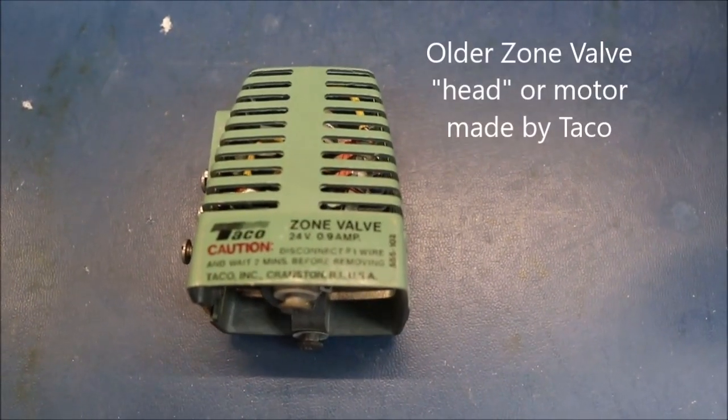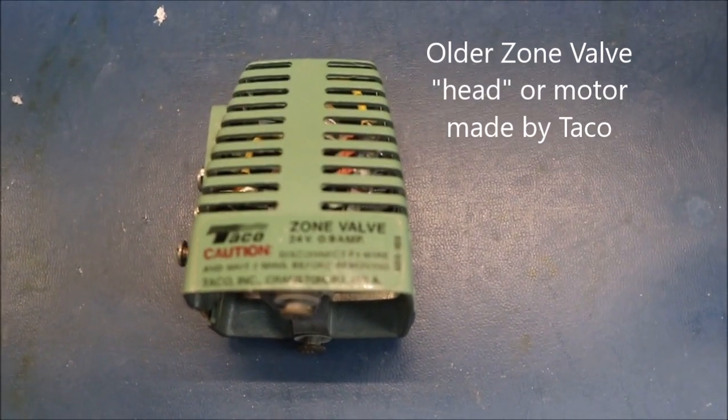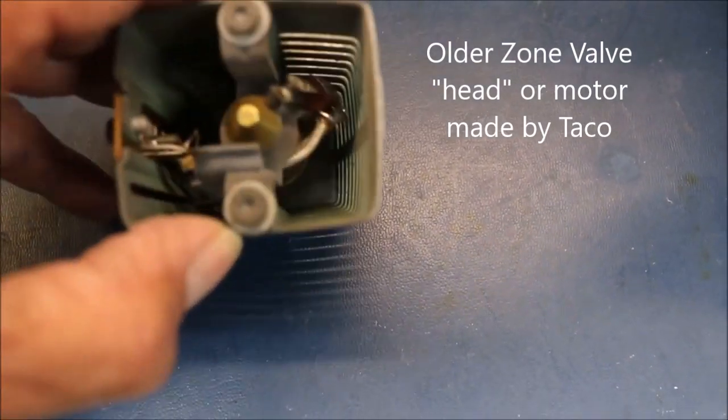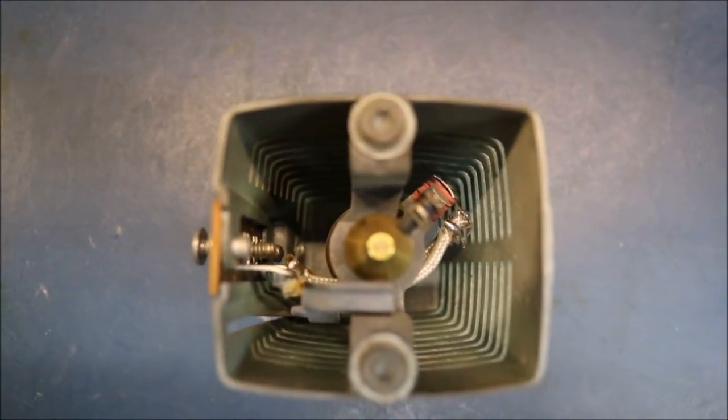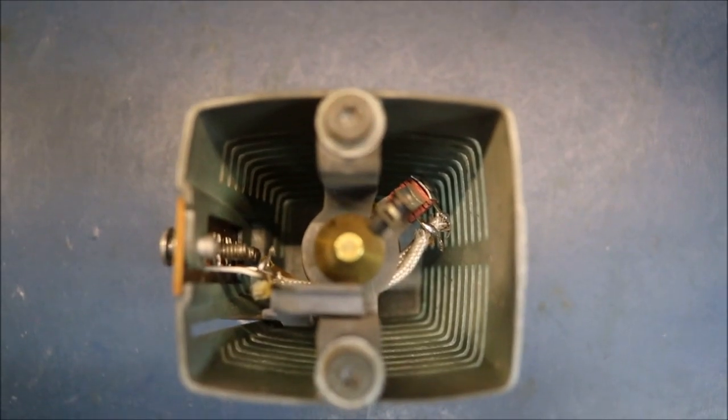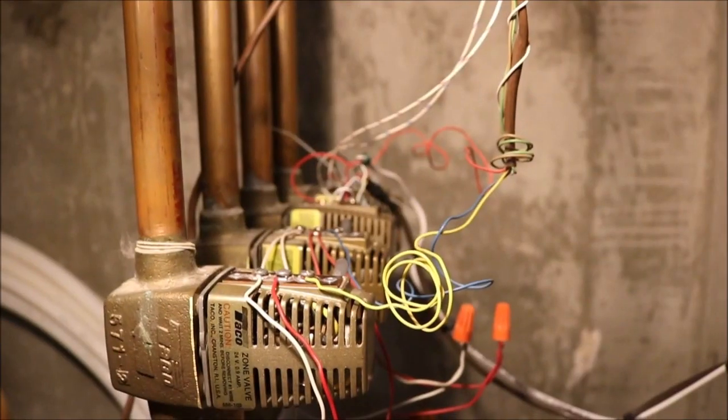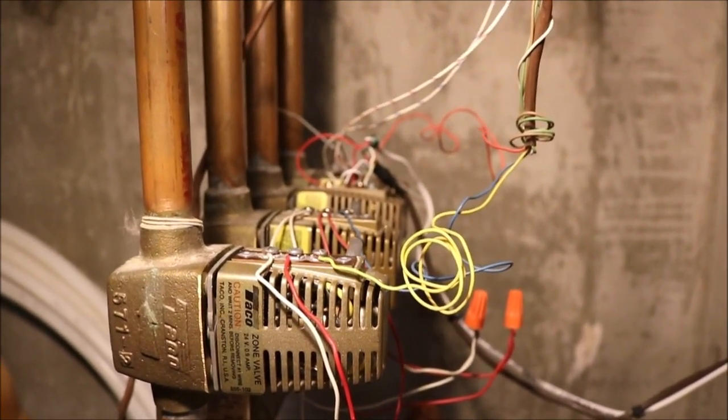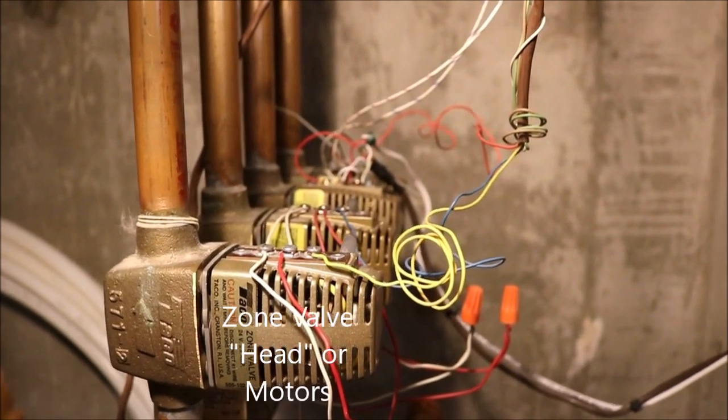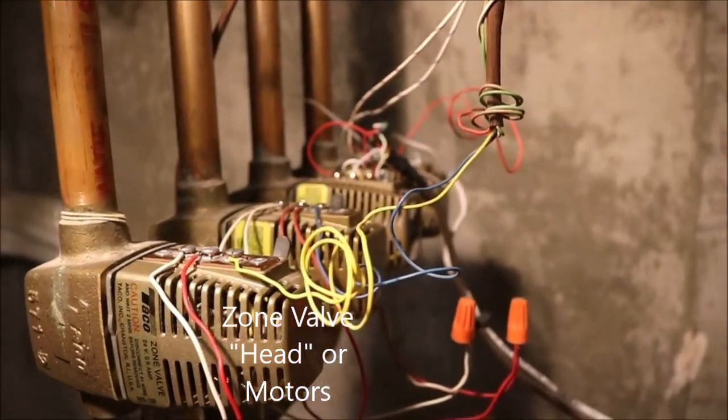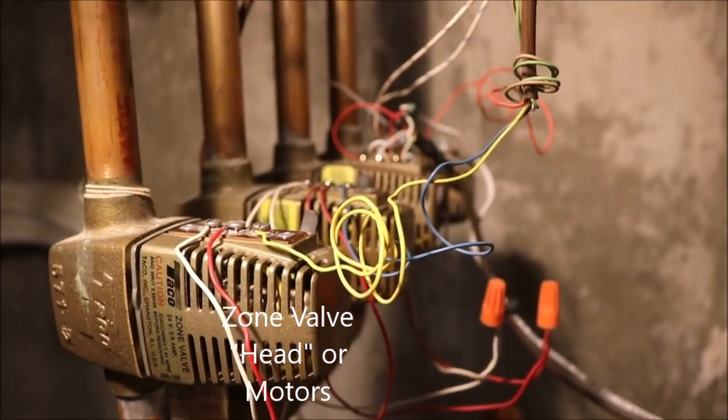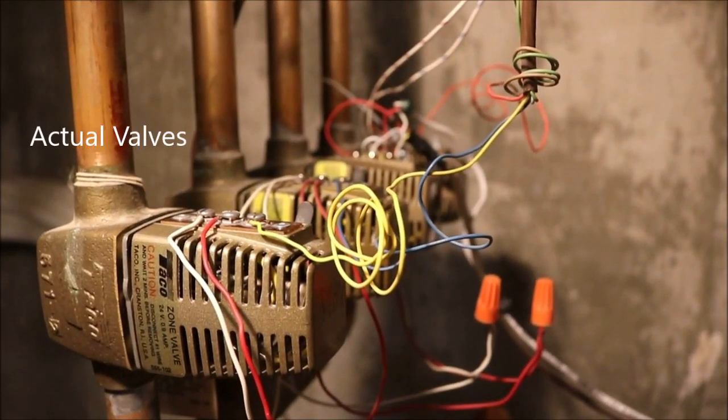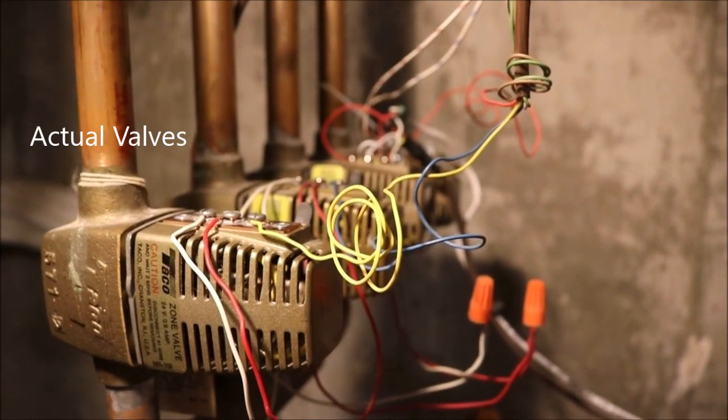Okay, this is a typical zone valve I have in my system, and you can see here that if you look inside, it has a plunger, and it also has some contacts in there, and we're going to talk about that. This is a picture of the four zone valves I have on my system that control the heating to the various zones, and very similar, although later models than the one I showed you on the bench.